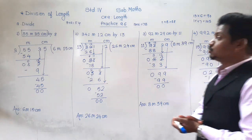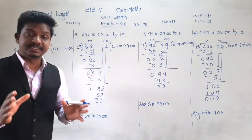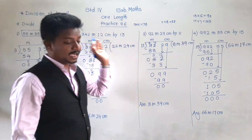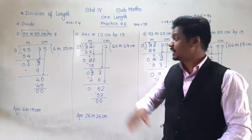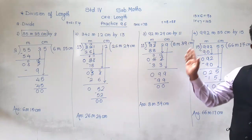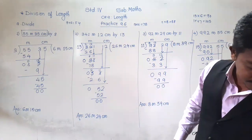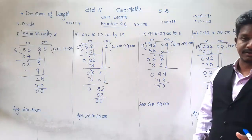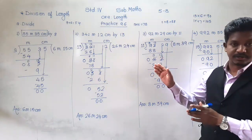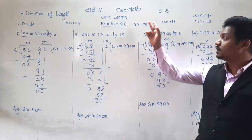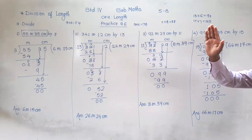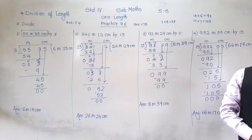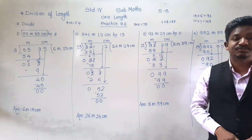So in this way we divide the length by a number. We have seen the first four examples in practice 9.6. Today, write these four examples in your notebook and solve examples 5 to 8 by yourself — that is today's homework. In tomorrow's lecture we will see examples 9 to 12. Thank you and have a nice day.